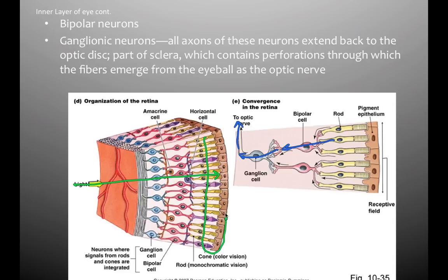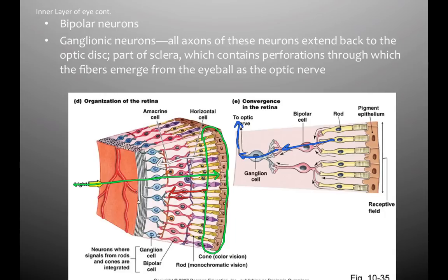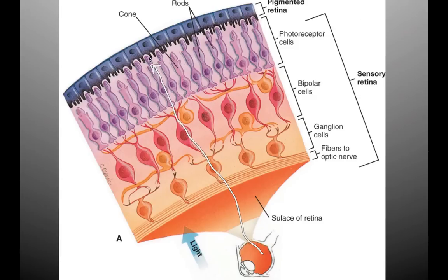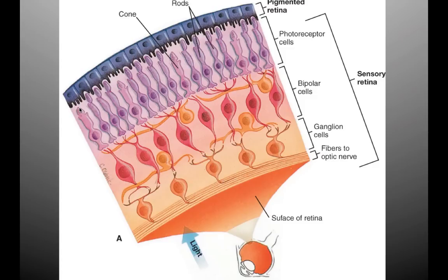The stimulation happens at the rods and cones in the back, but the message conveyed travels the other direction — towards the nerve fibers branching off the ganglion cells. So if light is coming into the eyeball, it passes through all of these cells to reach the rods and cones, stimulating them to fire action potentials and eventually giving us an image that we can perceive.